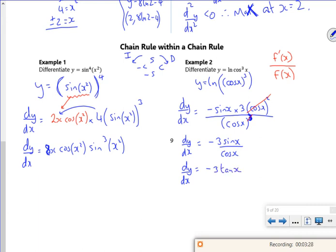So just a reminder, the cos of x all cubed becomes a minus sine x times three cos squared of x, and then it was divided by cos cubed x, so it cancels down nicely.